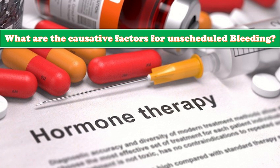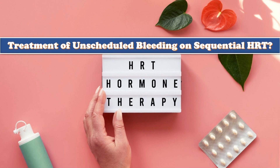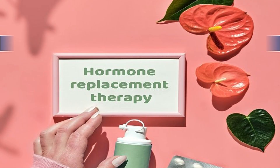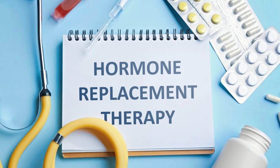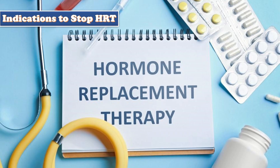For treatment of unscheduled bleeding on sequential HRT: in case of prolonged or heavy withdrawal bleeding, increase the dose or change the type of progesterone, or reduce the estrogen. In case of spotting before withdrawal, increase the estrogen dose. For unscheduled bleeding on continuous combined HRT, lower estrogen dose preparations are preferred, and increasing the dose or changing the type of progesterone may also help.